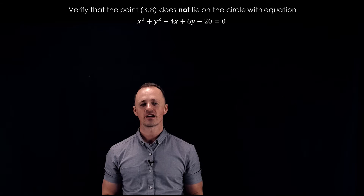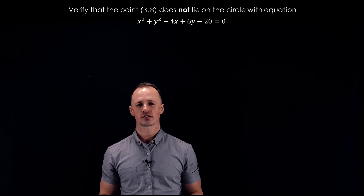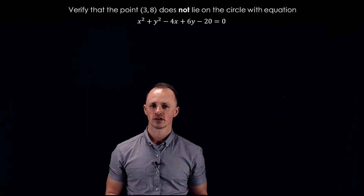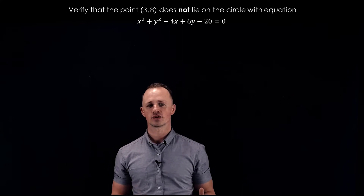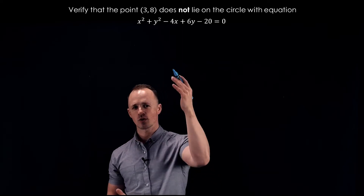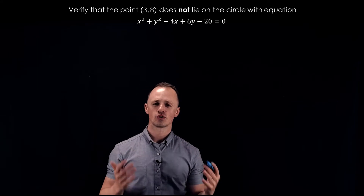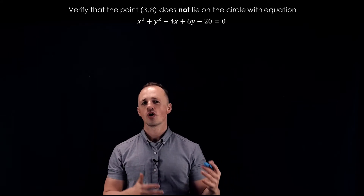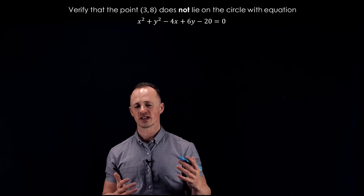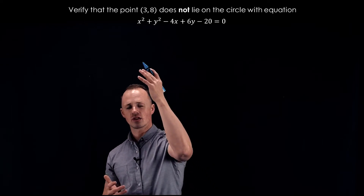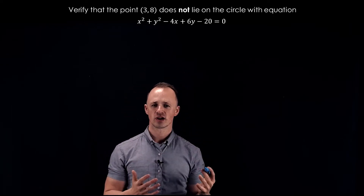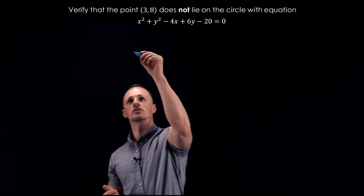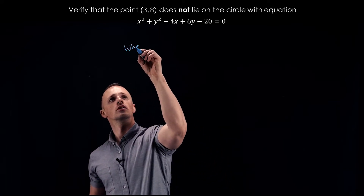In this example we're going to verify that the point (3, 8) does not lie on the circle with this equation. This is relatively straightforward if we remember that the equation of the circle describes all of the points that are on that circle. All we need to do to verify this is substitute the point (3, 8) into the circle equation and show that it doesn't work.